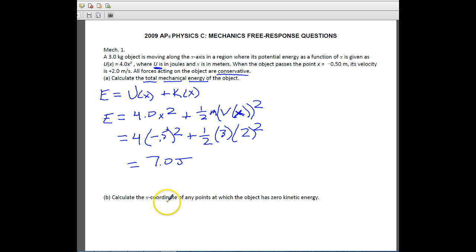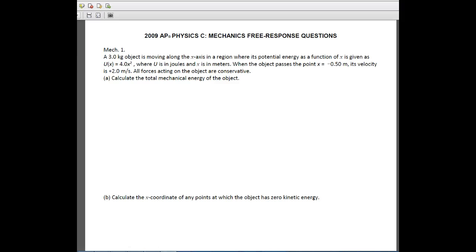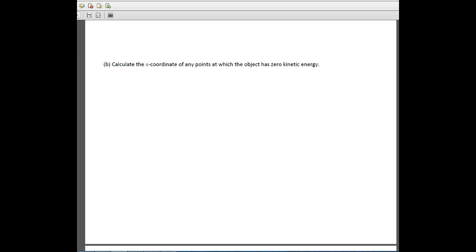For the next part, it says calculate the x-coordinate of any points at which the object has zero kinetic energy. So that's essentially where our energy is all going to be potential, and our kinetic energy should be zero. And we know our kinetic energy is zero when our speed is zero.